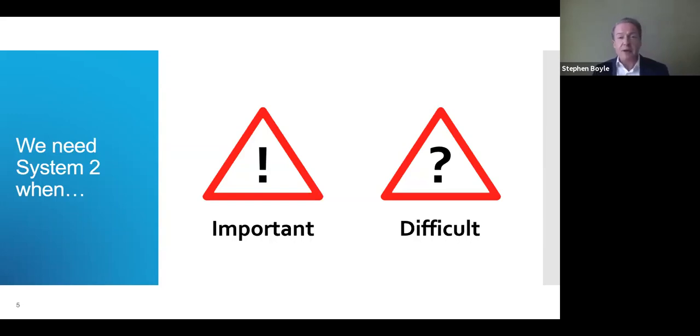Sometimes a decision might be important, but not apparently difficult. Because you might feel, well, this is an important decision, but the choice is obvious. I know what I should do here. In those decisions, I'd still advocate using System Two because System One is very good at tricking us into thinking that the best choice is obvious, that the option is clear, and that we don't need to look for other alternatives. So that's why I say System Two is always advisable if a decision is an important one.